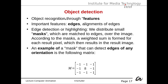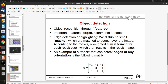This leads us to object detection, which is object recognition through features. Important features are edges and alignments of edges. Edges are important because they are easy to detect. Edge detection is done by distributing small masks matched to the edges over the image. According to the mask, a weighted sum is formed for each resulting pixel, which gives the result image.